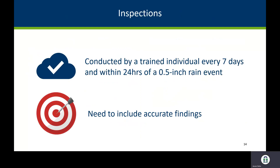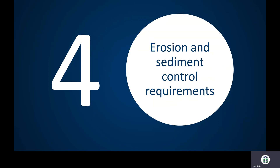Inspections are another big area of non-compliance — people not knowing when to do them or having inaccurate findings. Inspections need to be conducted by a trained individual at least once every seven days and within 24 hours of a rain event equal to or greater than half an inch. Accurate inspections are really important — they give us inspectors a story and overview of what's happened on your site. If you have a rain event and everything looks perfect on a 10-acre lot, that does raise suspicion. Inaccurate inspections are a violation.